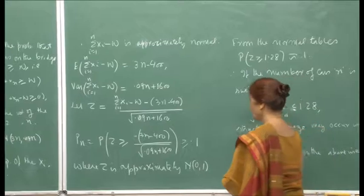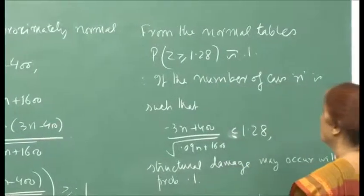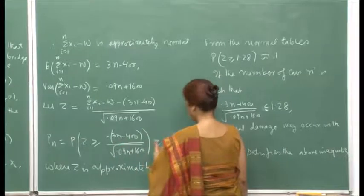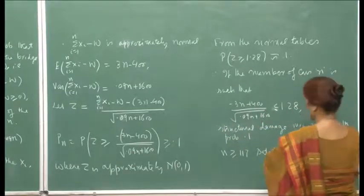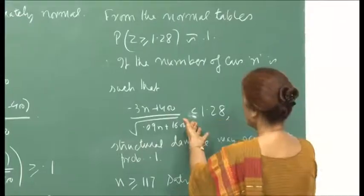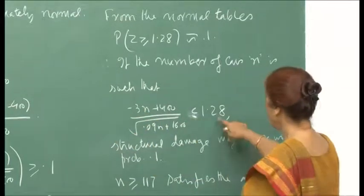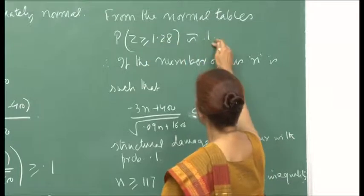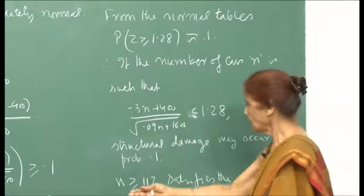We look up the standard normal tables and find that when Z ≥ 1.28, the probability is approximately 0.1. From the normal tables, this number should be 1.28 for the probability to equal 0.1. The whole idea is that if n is such that this expression equals 1.28, we get an approximation for n. If we write less than or equal to 1.28, this probability will be larger than 0.1, and solving gives n greater than or equal to 117.